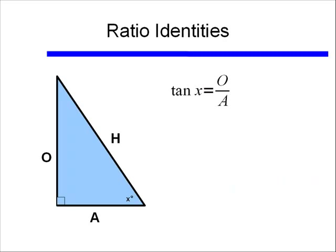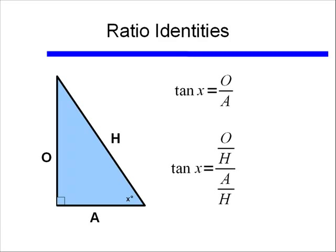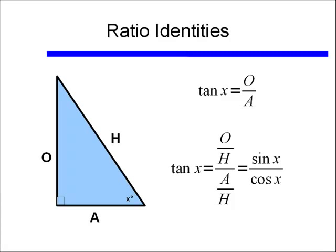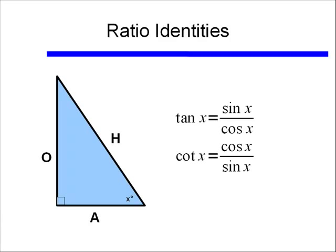Looking at tangent X — that's opposite over adjacent — we're going to build a ratio identity. If I divide the numerator and denominator by the hypotenuse, I get tangent X equals opposite over hypotenuse divided by adjacent over hypotenuse. Since sine X is opposite over hypotenuse and cosine X is adjacent over hypotenuse, tangent X equals sine X over cosine X. We'll use this a lot when simplifying trig expressions. Likewise, cotangent X equals cosine X over sine X.